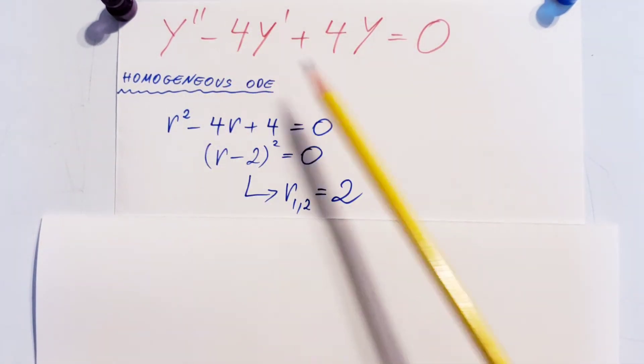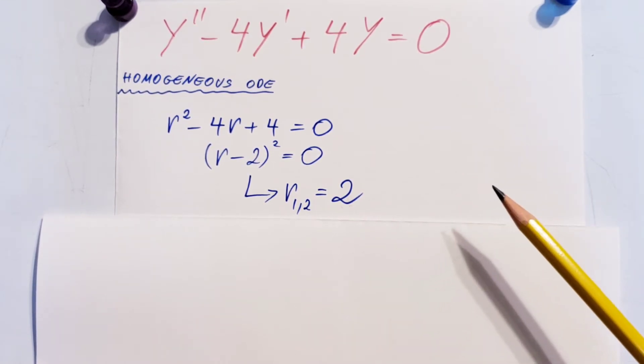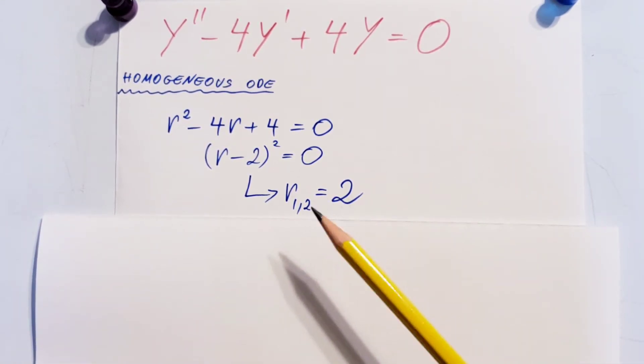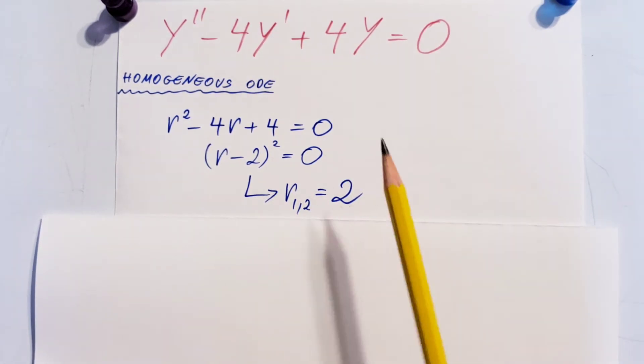When working with homogeneous equations, we have three scenarios: real roots that are distinct, real roots that repeat, and complex roots. This is the situation where we have real roots that repeat.